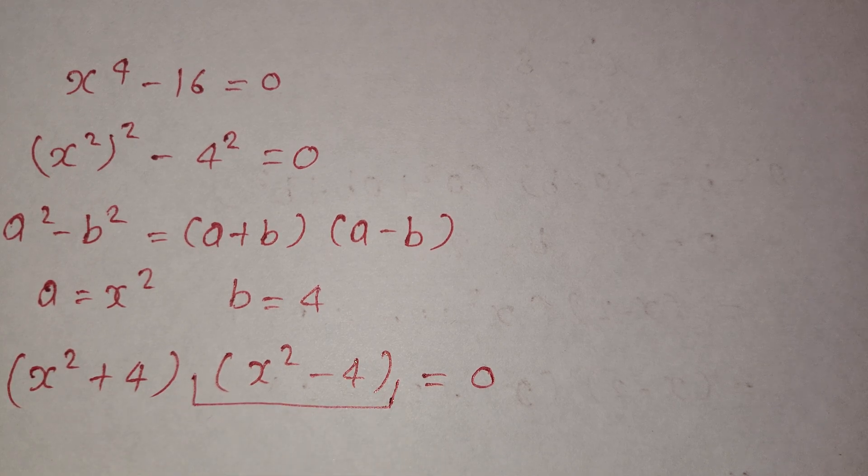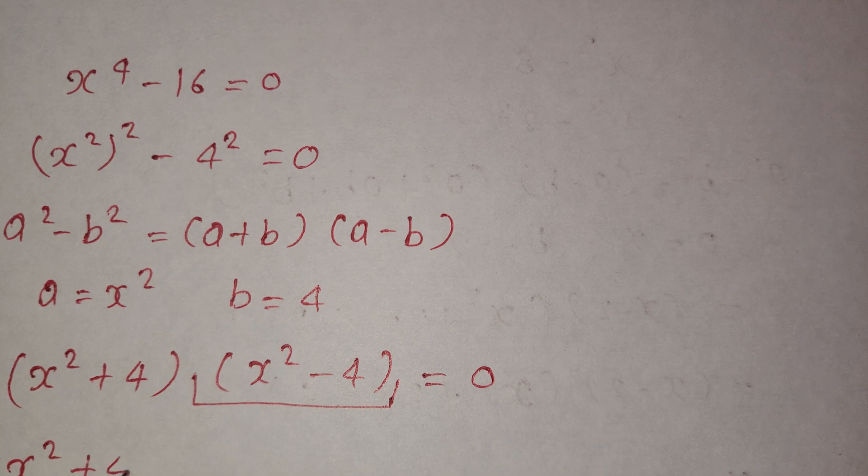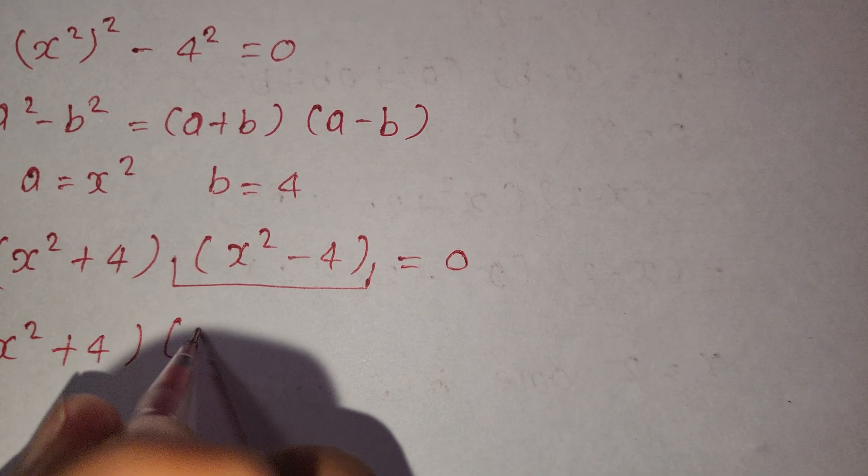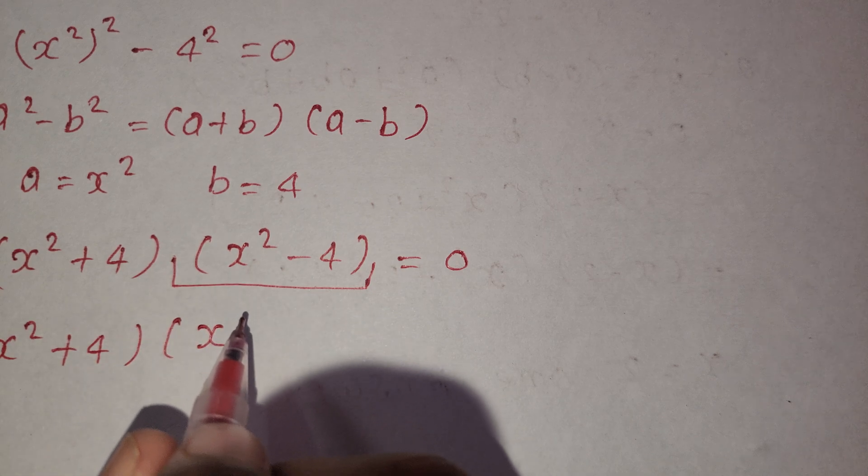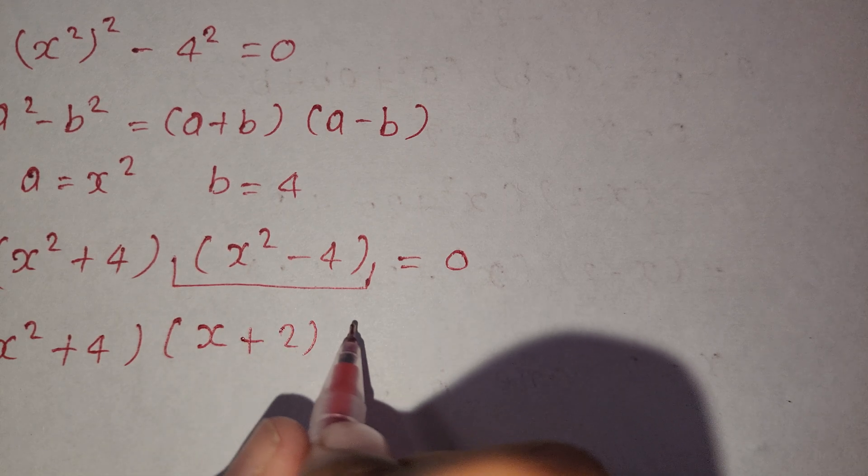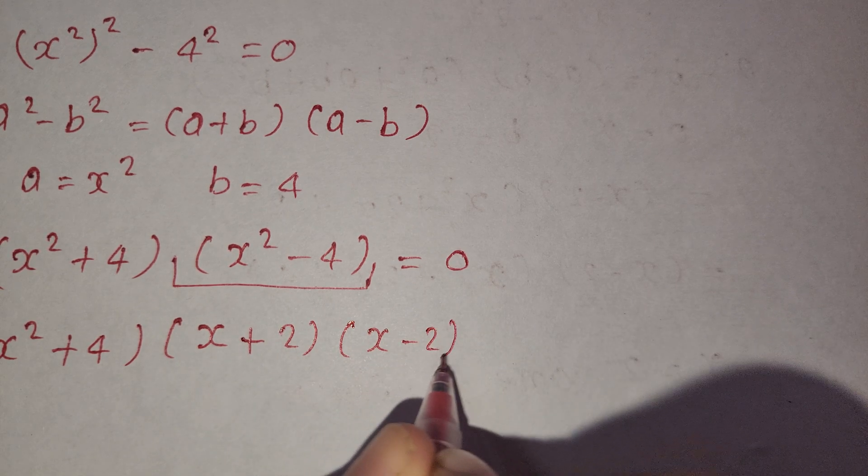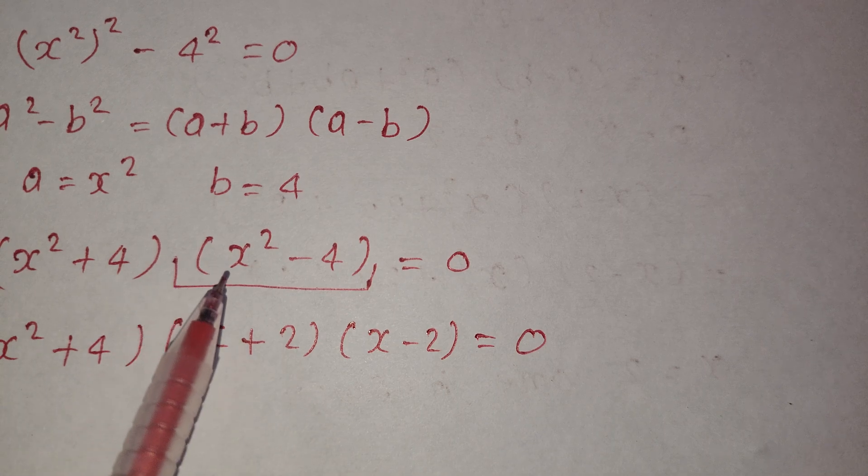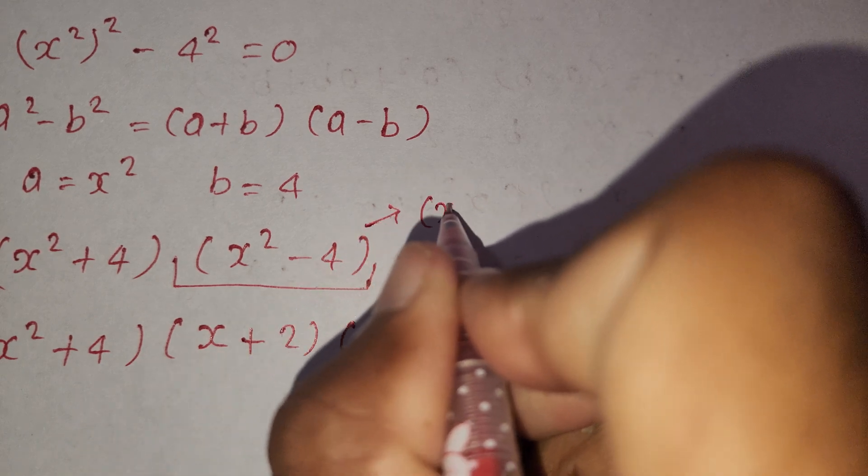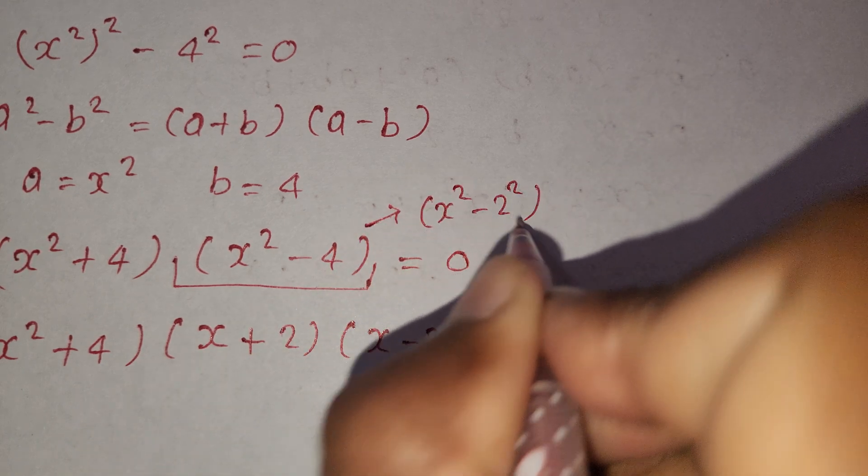This value is best for using difference of square formula again, and so we write x square plus 4 and x plus 2 and x minus 2 is equal to 0. Because here a is equal to x and b is equal to 2. Because we write as x square minus 2 square.